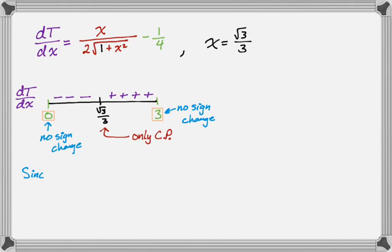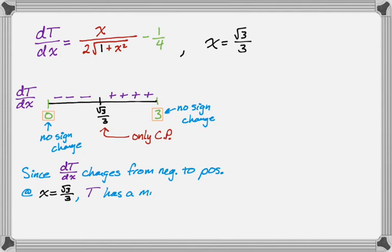Since dT/dx changes from negative to positive at x = √3/3, we know that T must have a minimum when x = √3/3. That's the first derivative test. So to answer the question, we want to aim for x = √3/3.